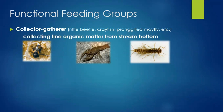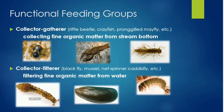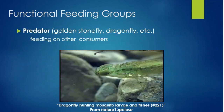Collector gatherers like the riffle beetle, crayfish, and the prong-gilled mayfly collect fine or really small pieces of organic matter like leaves from the stream bottom. Collector filters like the blackfly larvae, the mussel, and the net-spinner caddisfly filter even smaller pieces of organic matter carried in the water. The last functional feeding group is the predator, like the golden stonefly or dragonflies — predators eat other organisms in the stream.